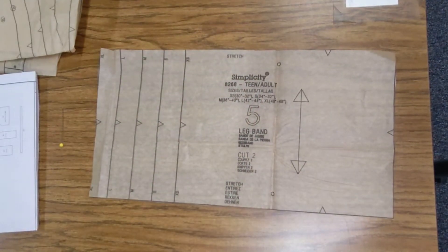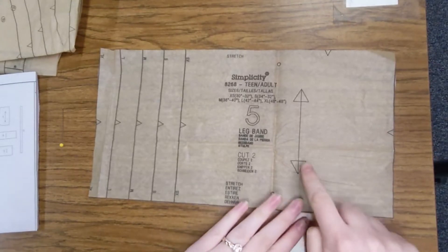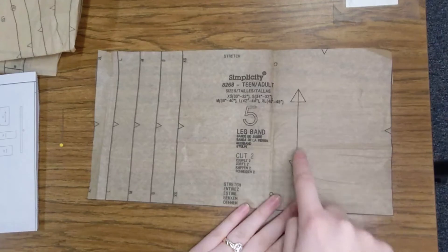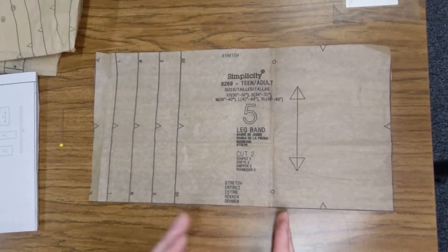Let's talk about some of the symbols on our patterns. So, here we have an arrow. This is our straight of grain arrow. The straight of grain arrow should always be parallel to the selvedge and the fold of the fabric when you lay it out.